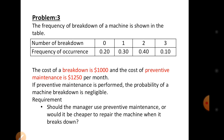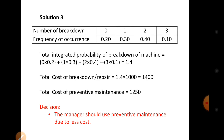Let's see our calculation. Given the machine breakdown and frequency of occurrence, we set up the expected cost table. Zero breakdowns: 0 × 0.2 = 0. One breakdown: 1 × 0.3 = 0.3. Two breakdowns: 2 × 0.4 = 0.8. Three breakdowns: 3 × 0.1 = 0.3. The total expected number of breakdowns is 1.4.